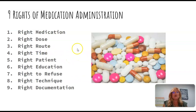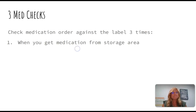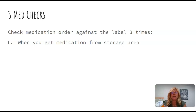Now let's move on to the three med checks. Any time you are about to administer a medication, you need to do three med checks. The first check happens when you get the medication from the storage — whether that's the refrigerator or a cabinet. When you first take that medication out, you do your med check, making sure you have the correct medication and the correct dosage before you proceed.